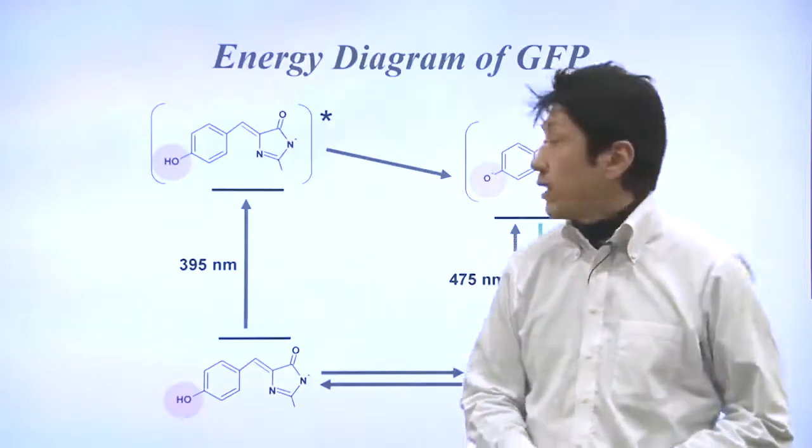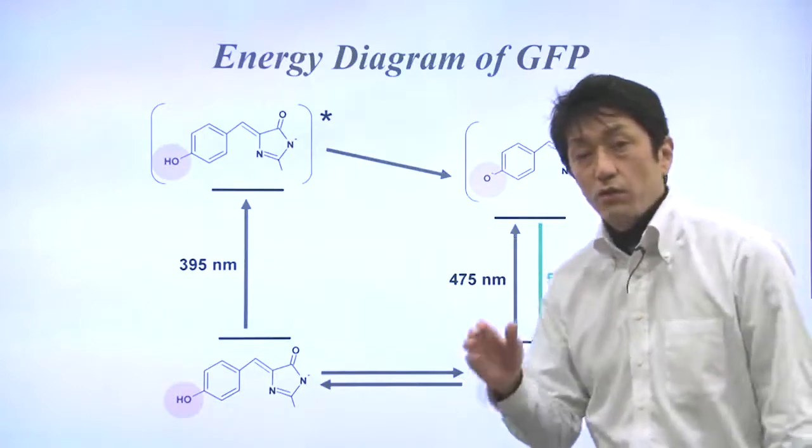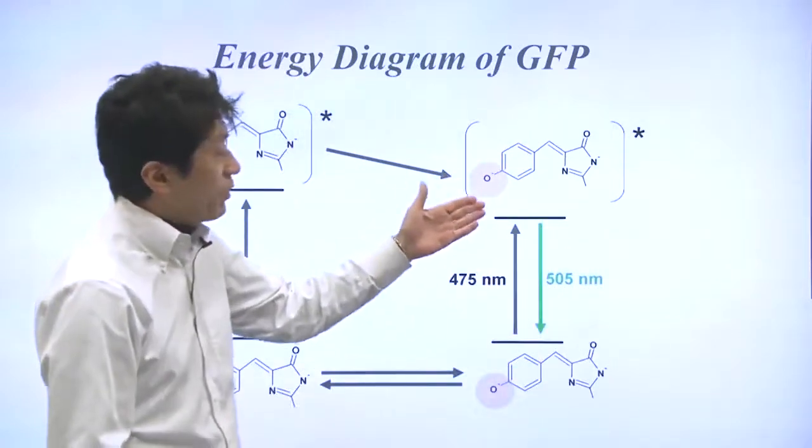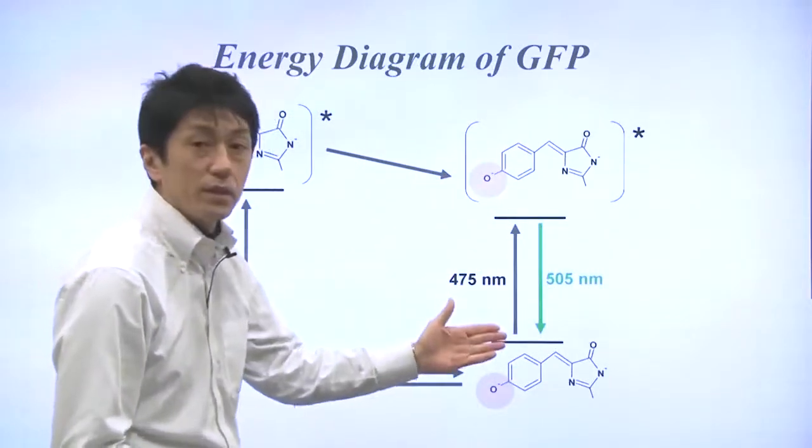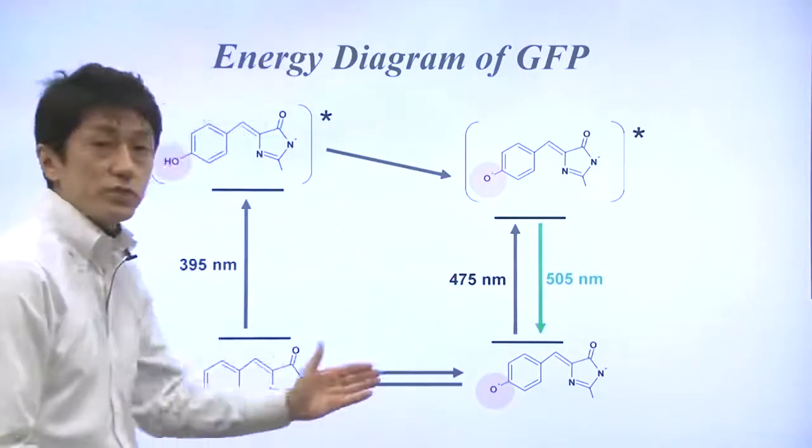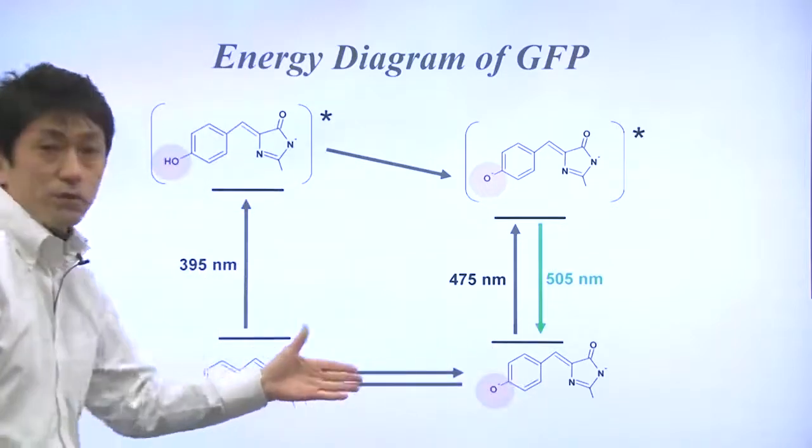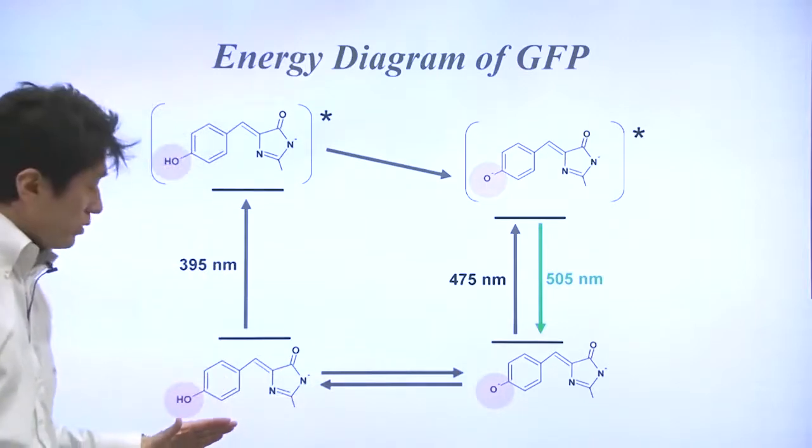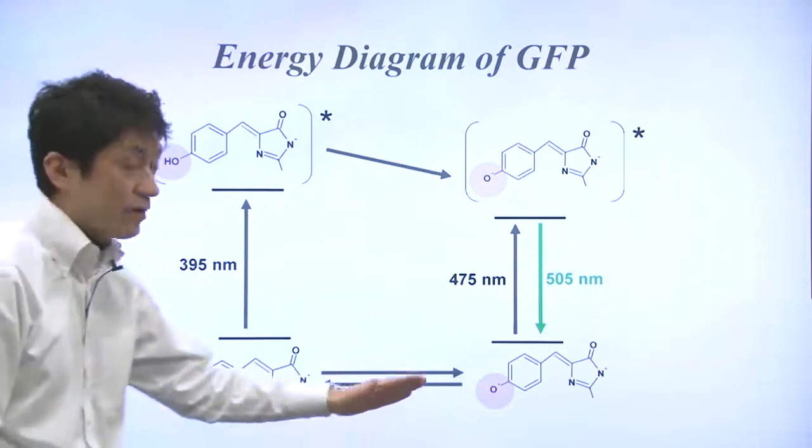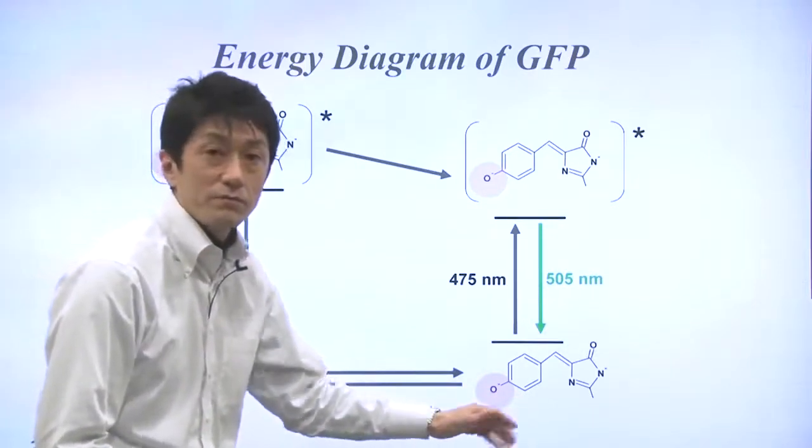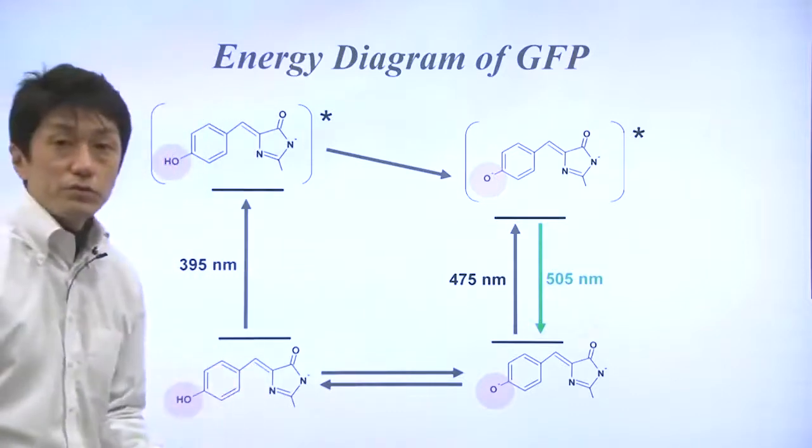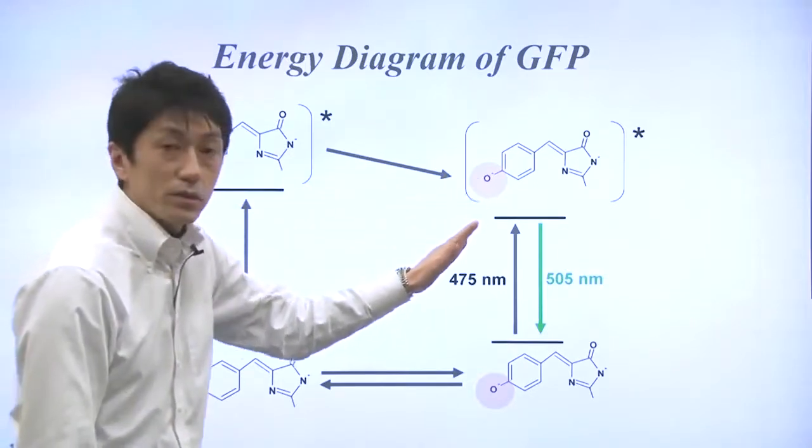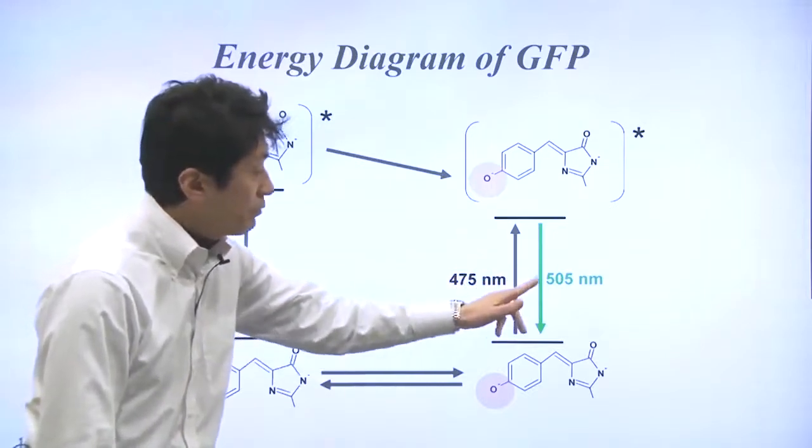It turns out that the emission at 505 nanometers is originated from the ionized form only. As I mentioned, these two forms are in equilibrium. The protonated form is excited at 395 nanometers and ionized form at 475 nanometers. The excited version of the protonated form needs to be deprotonated to emit the fluorescence at 505 nanometers.